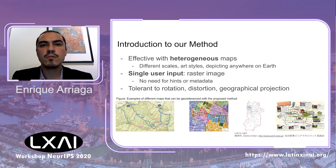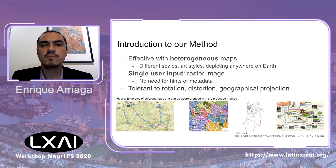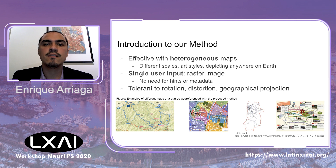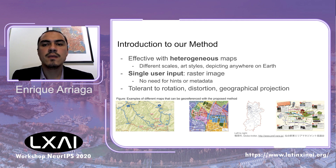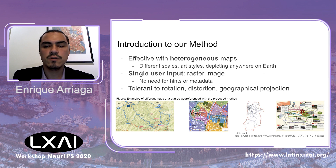In this paper, we present a novel method to automatically georeference digitized maps. This method is designed to work with maps with different scale, different art style, and basically depicting any place on earth. The main advantage is that the only input from the user is the raster image, because it doesn't require any additional hint or metadata. At the same time, the method is also highly tolerant to rotation, distortion, or even to projections.